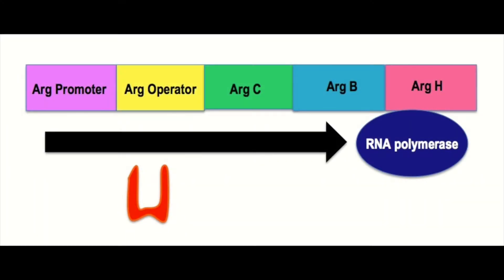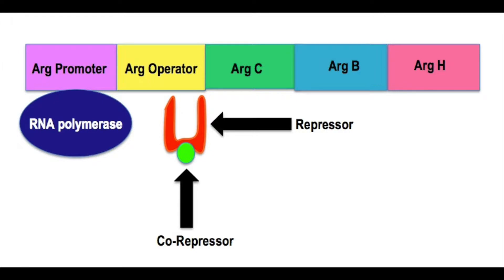When the repressor is not able to bind to the operator, the operon can be transcribed. Transcription is blocked when a co-repressor or small molecule binds to the repressor, preventing it from binding to the operator. This blocks transcription, stopping the formation of mRNA and the proteins it would have encoded. The arginine operon's co-repressor is arginine, an amino acid that binds to the arginine repressor. This model is an example of enzyme repression.